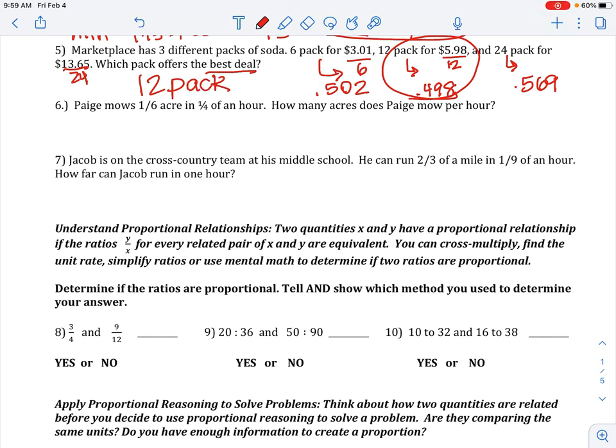For number 6, Paige mows 1 sixth acre in 1 fourth of an hour. So, you're doing acres per hour. You're doing 1 sixth divided by 1 fourth. Remember, when you have a fraction within a fraction, our vocab word for that is complex fraction.